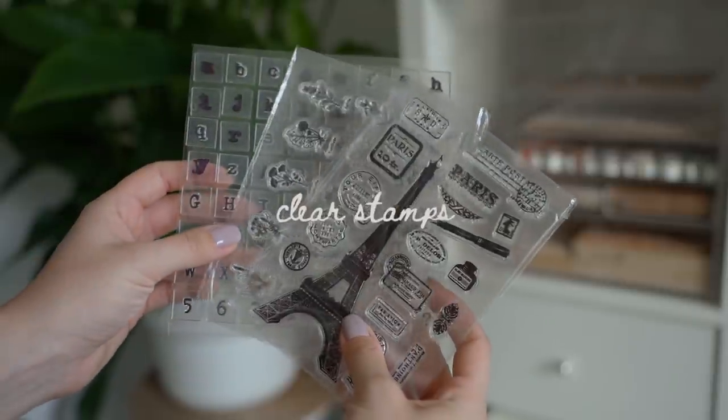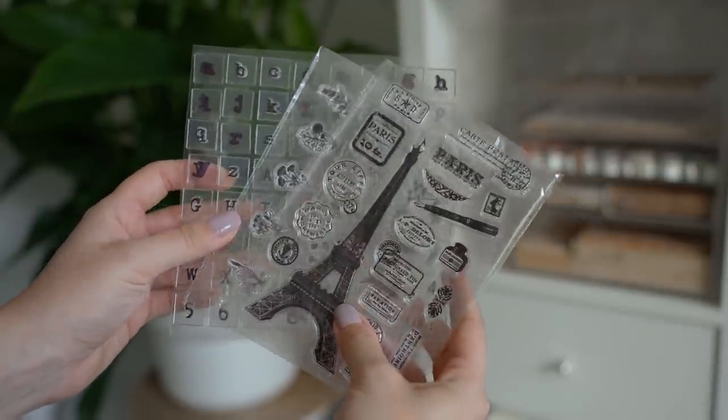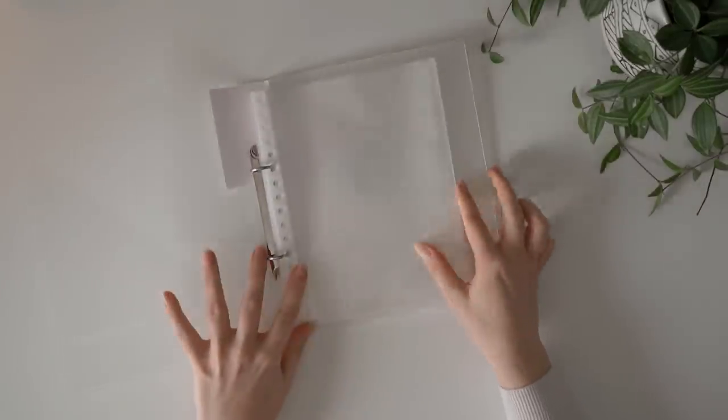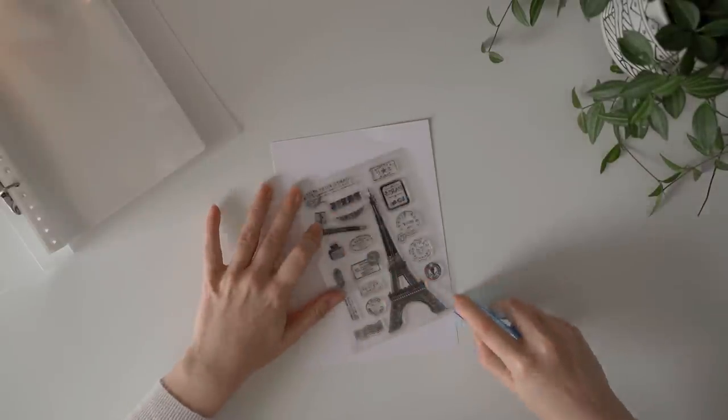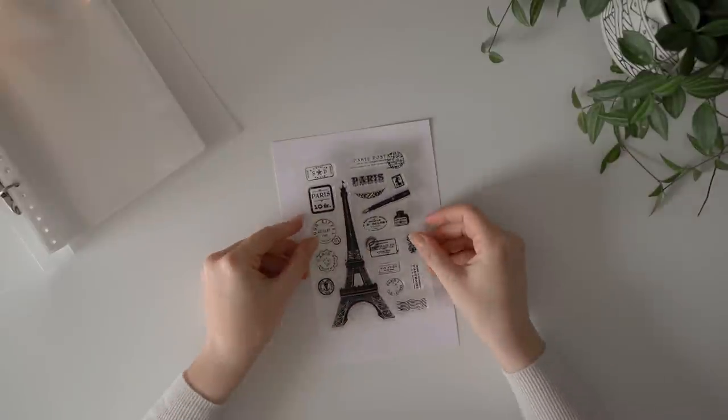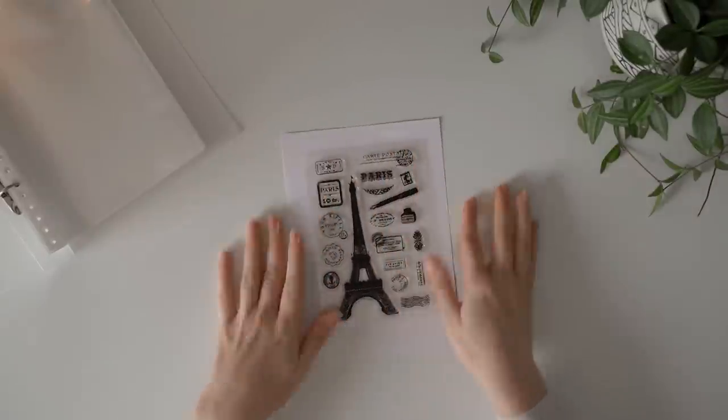I used my clear stamps quite a lot so I needed to store them in a way that I can quickly browse through them. So I got an A5 binder that I filled with clear pockets. I pasted the back film of the stamps onto pieces of paper so that I can see them better and so that they also don't slide around inside of the pockets.